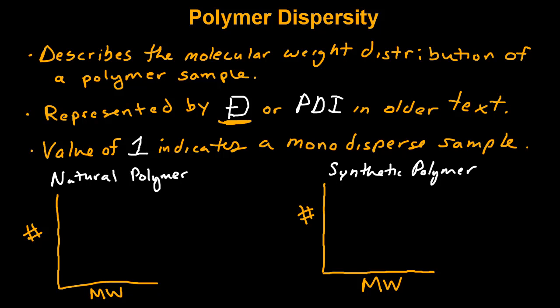A value of one indicates a monodispersed sample, and values closer to one indicate a polymer sample that is more uniform.